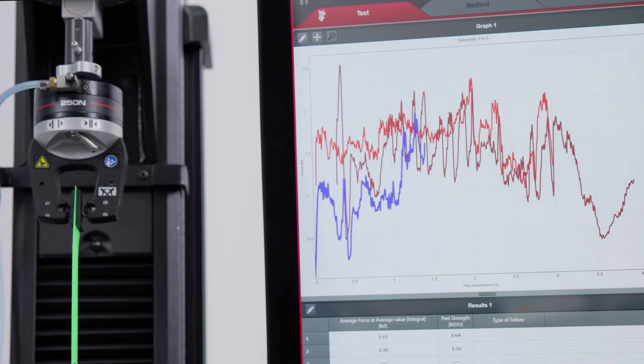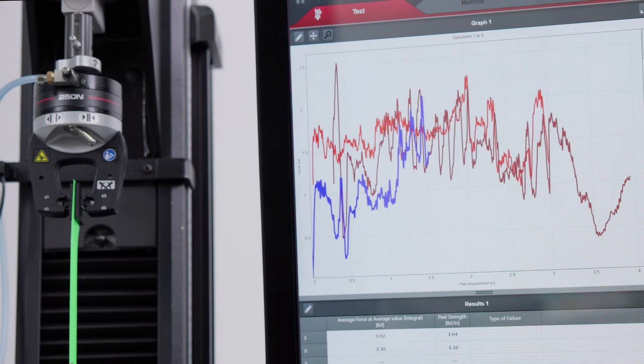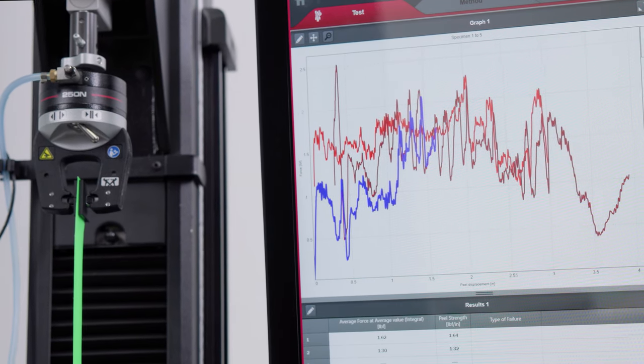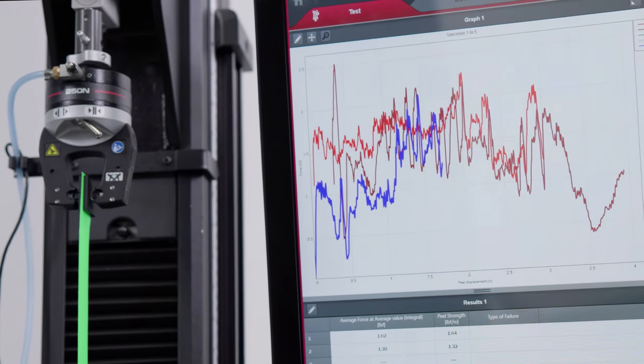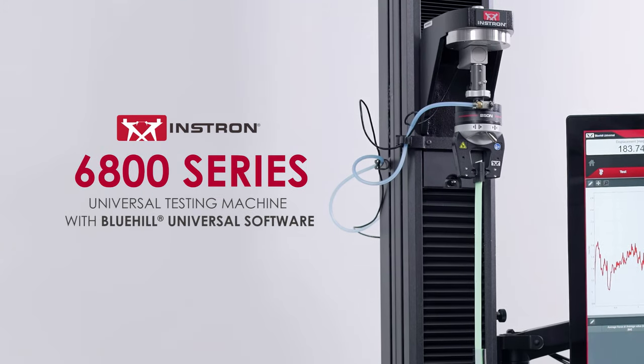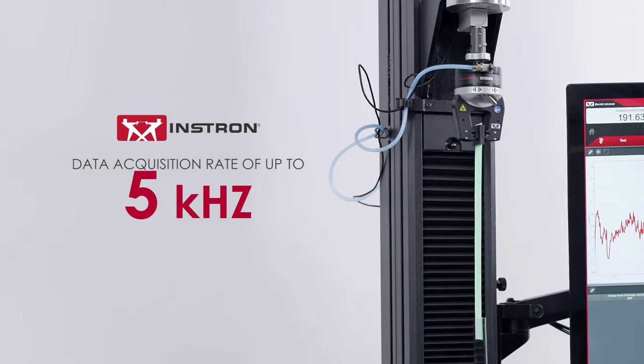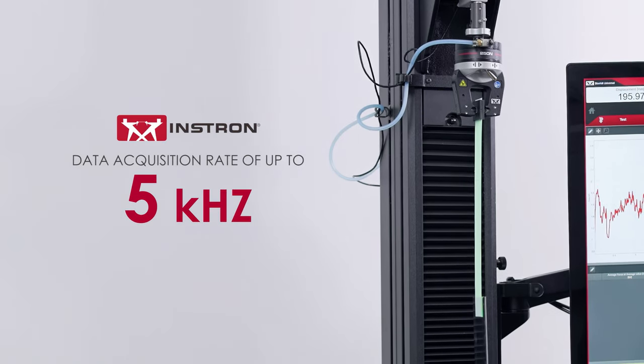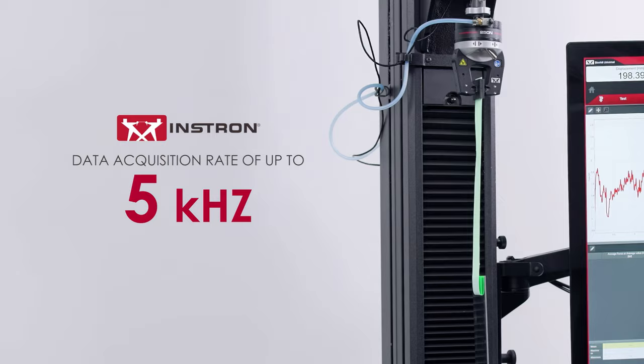Data from peel testing is prone to peaks and troughs and requires a test system with a high data acquisition rate to ensure that accurate peel adhesion values are obtained. INSTRON 6800 series systems with Bluehill Universal have a data acquisition rate of up to 5 kHz to capture every test event.